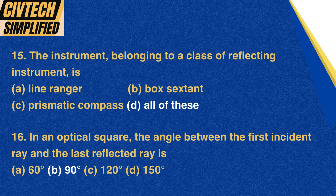Question 15: The instrument belonging to a class of reflecting instruments is: A. Line ranger, B. Box sextant, C. Prismatic compass, D. All of these. Correct option: D. All of these. Question 16: In an optical square, the angle between the first incident ray and the last reflected ray is: A. 60 degrees, B. 90 degrees, C. 120 degrees, D. 150 degrees. Correct option: B. 90 degrees.